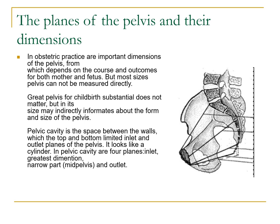The great pelvis for childbirth does not matter substantially, but its size may indirectly inform about the form and size of the small pelvis. The pelvic cavity is the space between the walls, limited at the top and bottom by the inlet and outlet planes of the pelvis. It looks like a cylinder. In the pelvic cavity there are four planes: the inlet, greatest dimension, narrow part, the midpelvis, and the outlet.